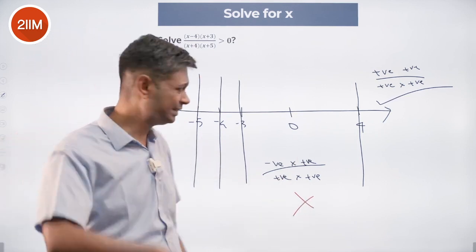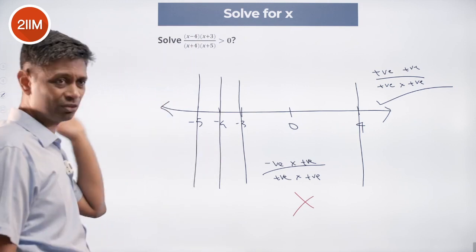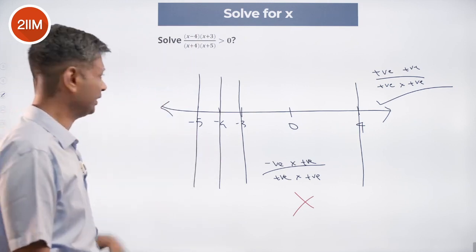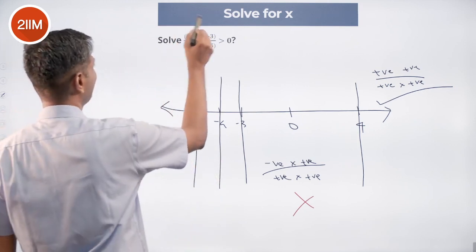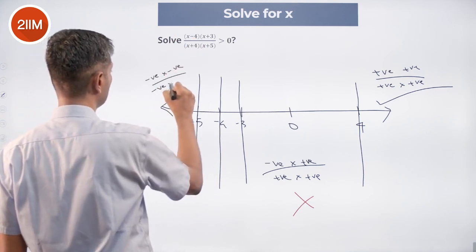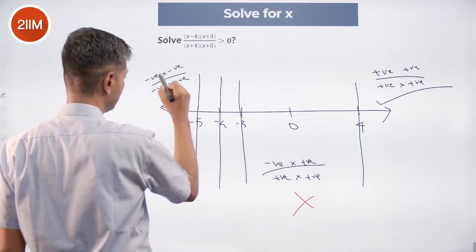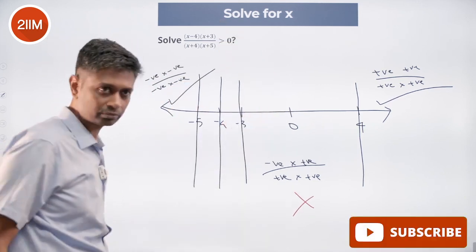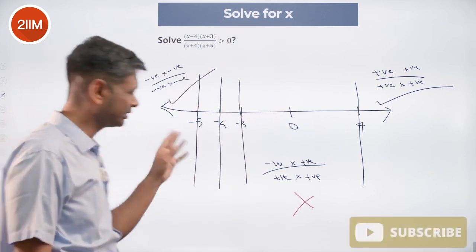Nice. Now I say, hey, nice. Let me go all the way to the extreme, minus 5. Less than minus 5. Here, negative, negative, negative, negative. Minus into minus, minus into minus. This is positive. Here it works. Less than minus 5 it works.